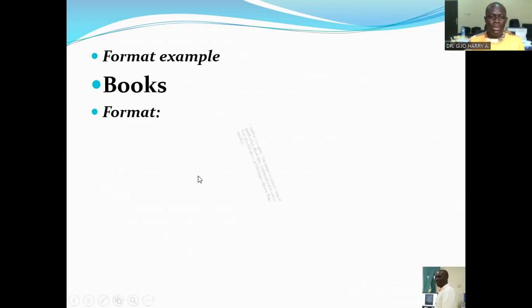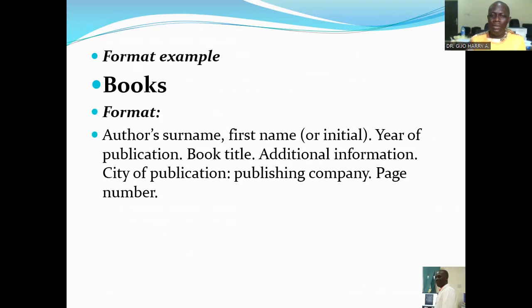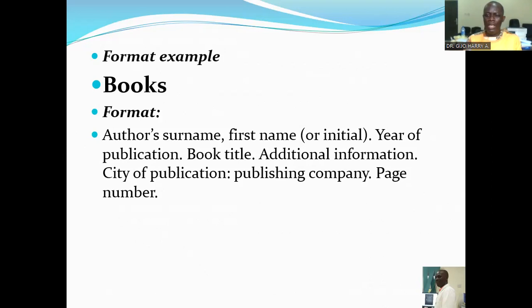For referencing books, the format includes: the author's surname followed by the first name or initials, then a full stop, then the year of publication, then the book title, then additional information and city of publication, then the publishing company, and the page number. For example: Alan T.B. — the author's surname written in full, other names abbreviated — followed by the year, then the title Vanishing Wildlife of North America, then Washington D.C., then National Geographic Society.